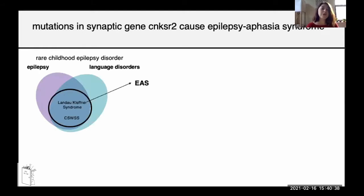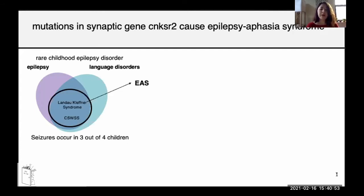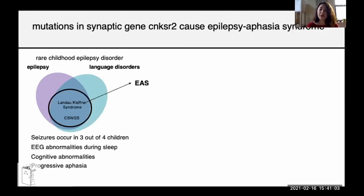Epilepsy aphasia is a spectrum of disorders in which epilepsy and language disorders overlap. At the severe end of the spectrum are Landau-Kleffner syndrome and continuous spike and wave during slow-wave sleep syndrome. This syndrome is characterized by seizures occurring in three out of four children, EEG abnormalities during sleep, cognitive abnormalities, and progressive aphasia, which is the loss of language skills.